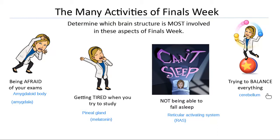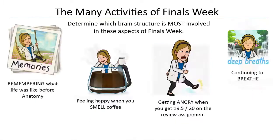The hippocampus is the part of the brain responsible for memories — remembering what life was like before anatomy. The hippocampus is the one part of the brain that is always growing; everyone else is done but the hippocampus keeps making new memories. The amygdala also drives anger — like when you get a 95% when you were sure you had 100%. The olfactory bulb is the limbic system structure that makes us feel good or feel something when we smell coffee.